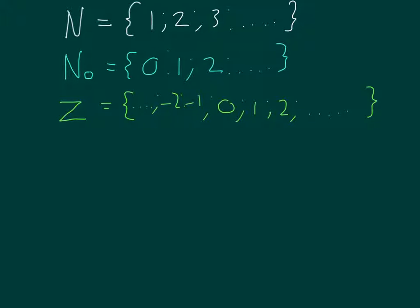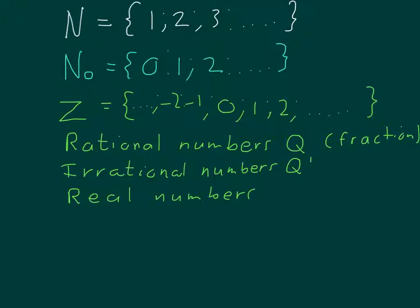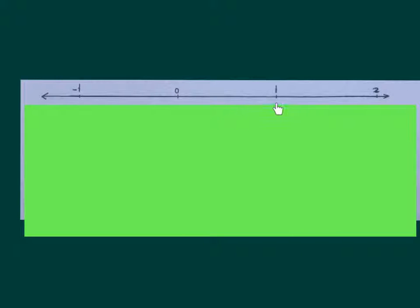The last three sets of numbers are rational numbers indicated by Q — a shortcut is fractions — irrational numbers written as Q with a little one in the air, and then real numbers indicated by R. Before we get to the words and symbols of these last three names, we first need to understand where numbers fall. We have our integers: minus one, nought, one, two, and it goes on in both directions.